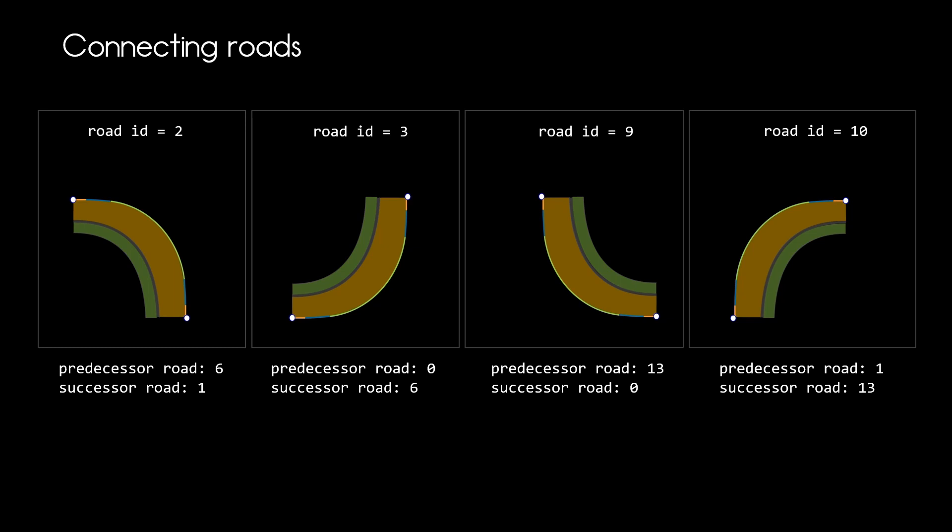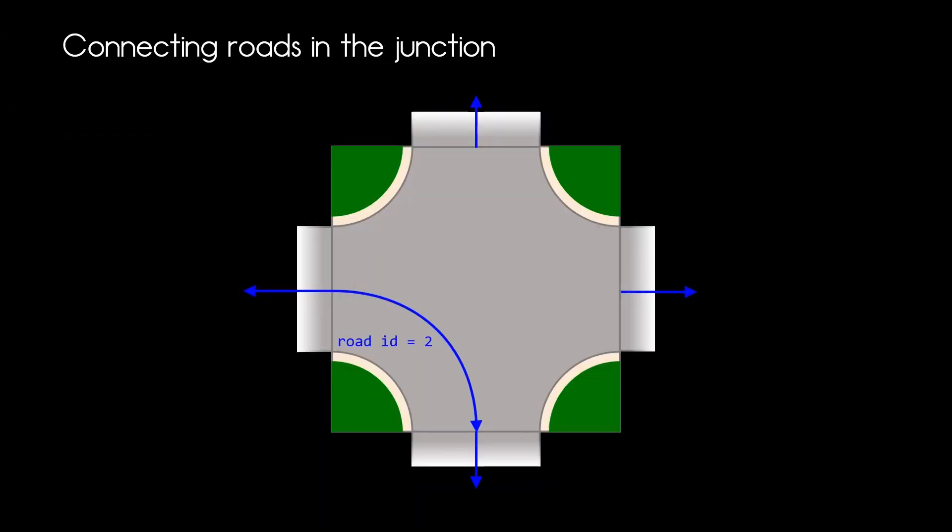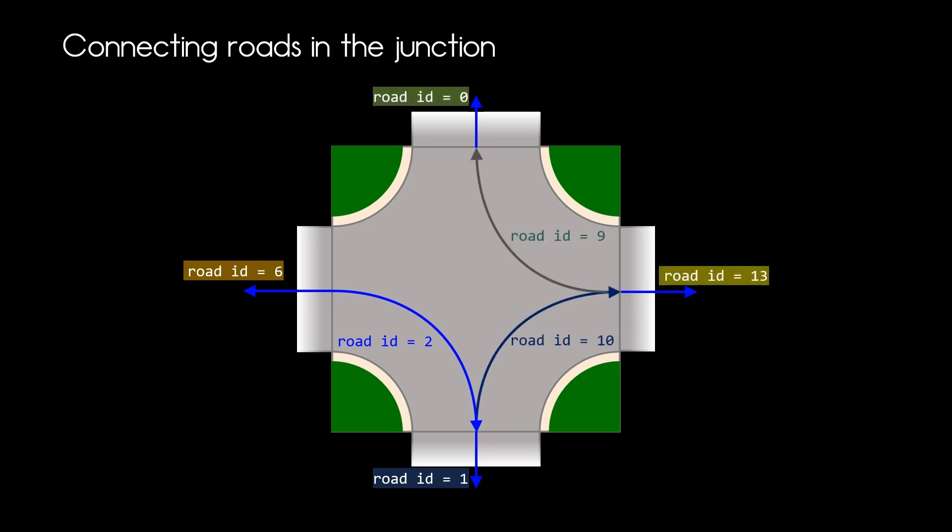Now let's put those roads into the junction itself. And here we can see it. Where each of those roads lead to and where they are coming from. At this point we now know how to define our junction.